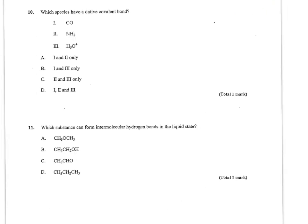Number 10 says which species have a dative covalent bond. Remember, this is when one element donates both electrons. So the easy way for me to tell is when I draw them. For example, when I draw CO, I see it has a triple bond and then they each have a lone pair.